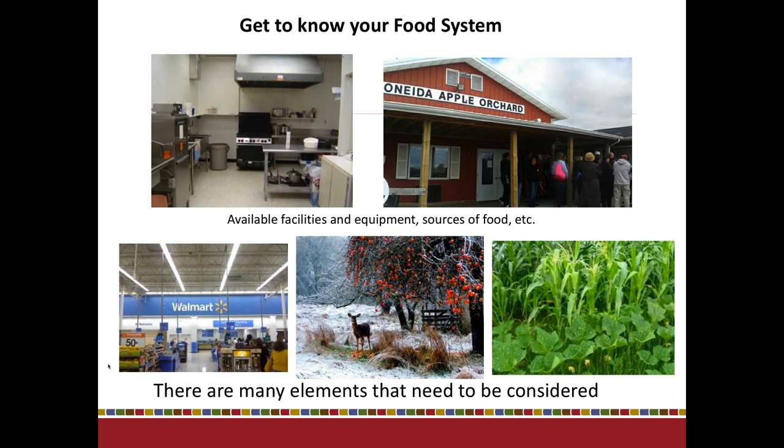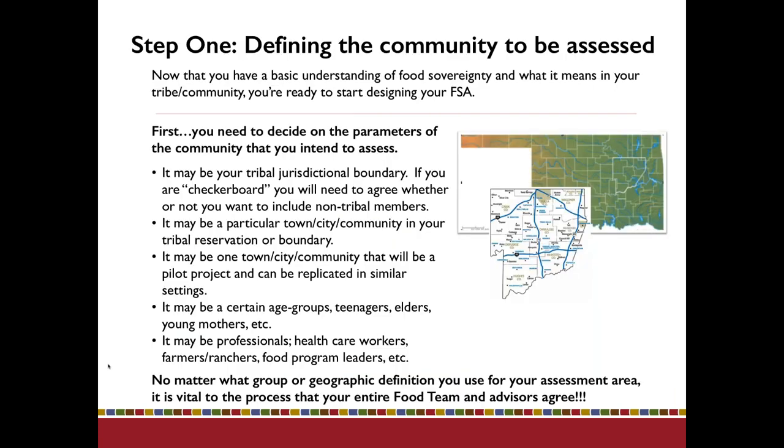That Head Start kitchen had moved on to another location and the kitchen was left behind. As an example of using community assets already there that you'll discover when looking at your food system, that group decided to get that kitchen up and running, bring it up to FDA standards for food safety so they could produce value-added goods. They sought grant money, got the kitchen fixed up and inspected, and could start producing their own value-added goods that could be sold anywhere, not just on tribal lands.